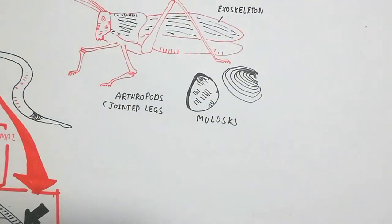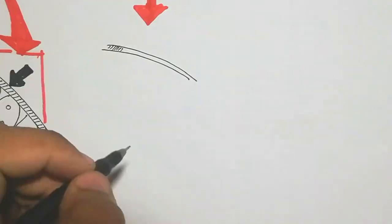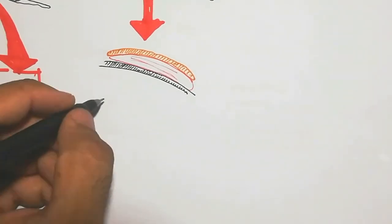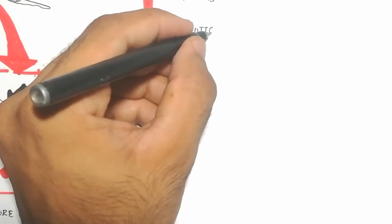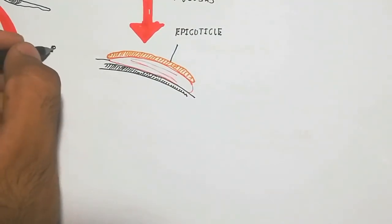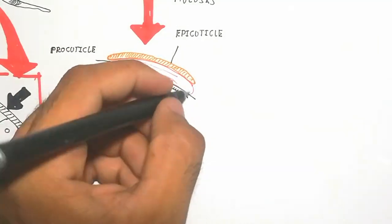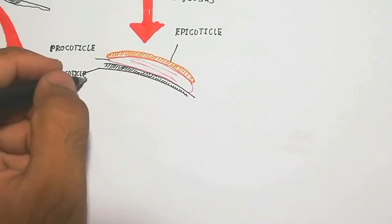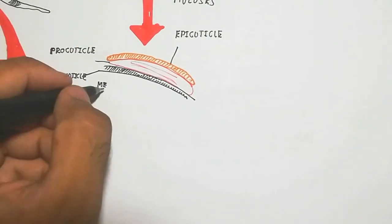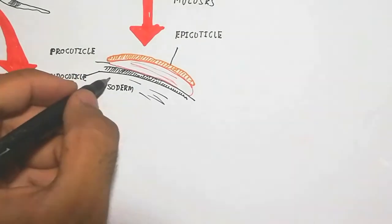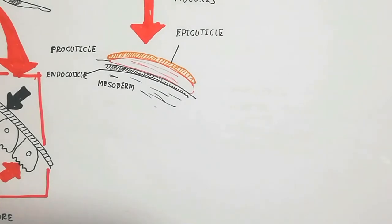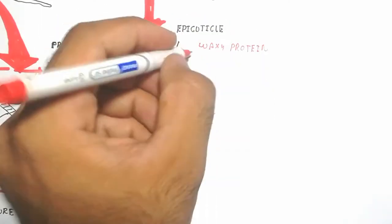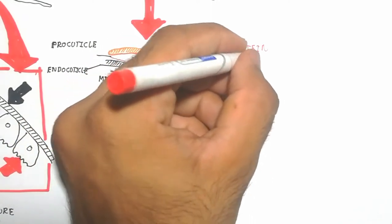The exoskeleton is major in arthropods — jointed legs — and mollusks. It is composed of layers: the epicuticle on the outside, the procuticle below it, and the endocuticle on the inside. The epicuticle is made up of waxy protein layers which protect from microorganisms and water invasion.